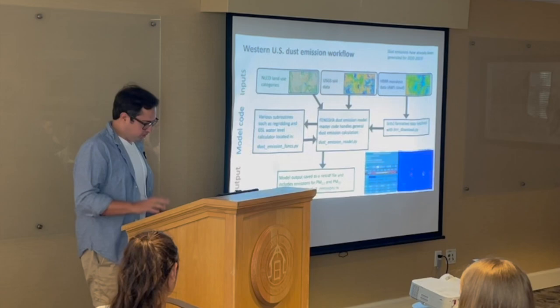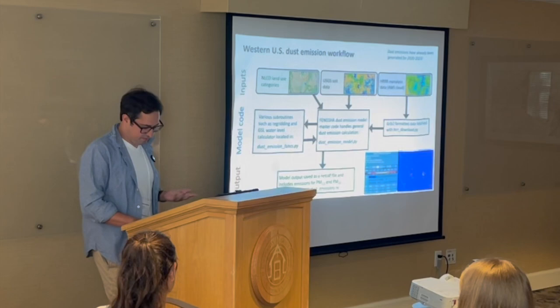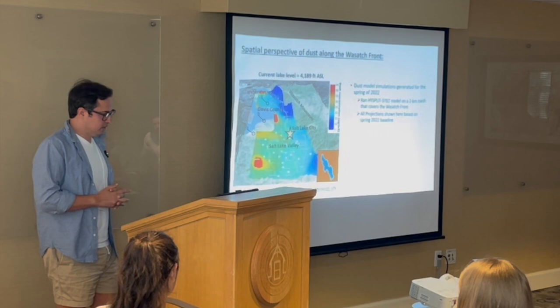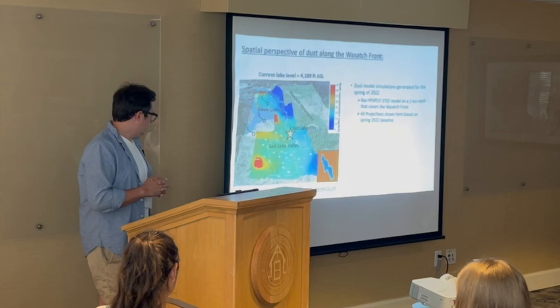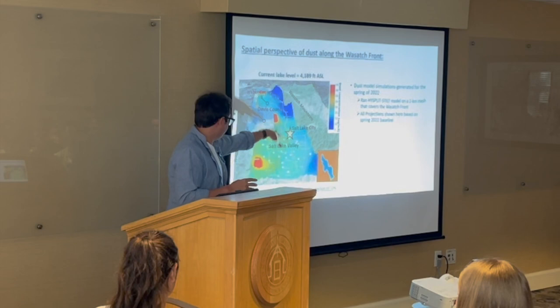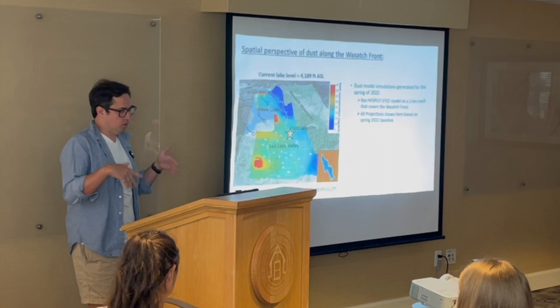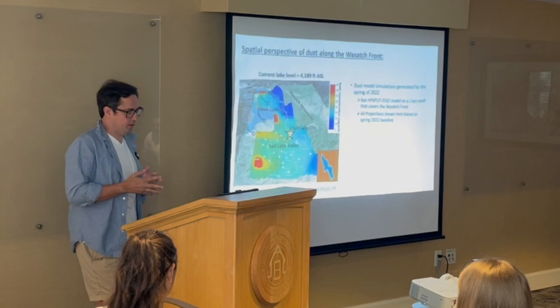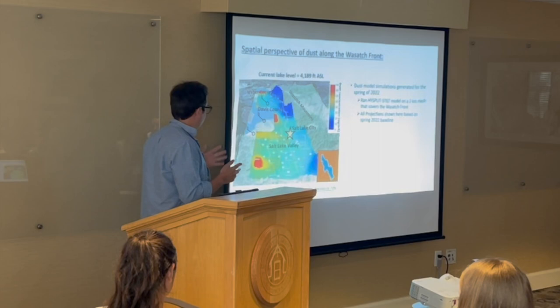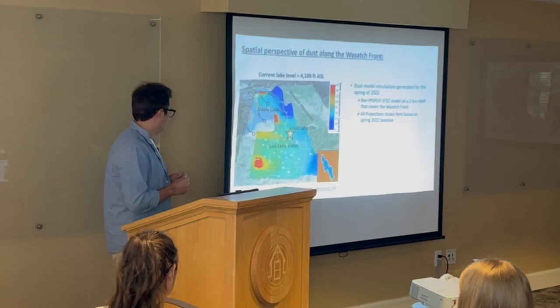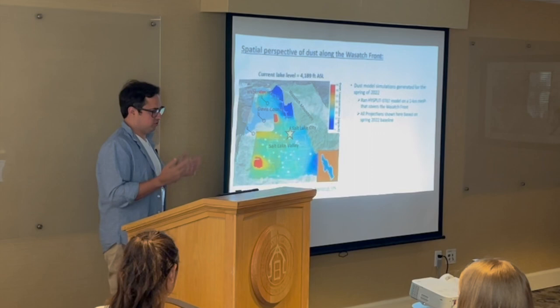One thing I did was start running STILT on a grid. STILT is normally a point-based model where you run backward trajectories from a single location, but I decided to run it on a grid using two-kilometer grid cells covering all of the Wasatch Front. I then computed the dust contribution to PM2.5 across that domain for the spring of 2022. When you look at the resulting map, you notice an east-to-west gradient — on the western side of the domain you're closer to dust sources like the Great Salt Lake and the West Desert.